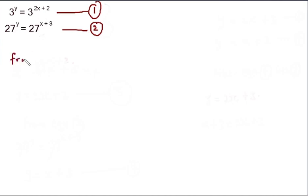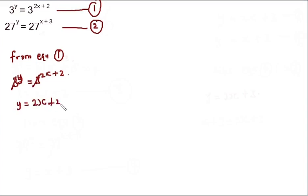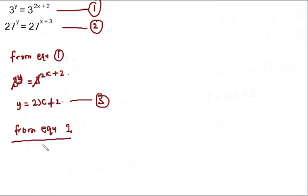From equation one, we have 3^y = 3^(2x+2). If you look at this equation, you have a base number of three on both sides, so you can cancel out the base numbers and leave the exponents. That gives us y = 2x + 2. We've simplified equation one into a linear equation, so we can call this equation three.